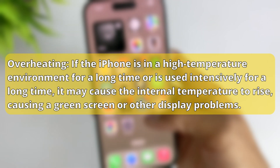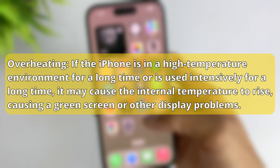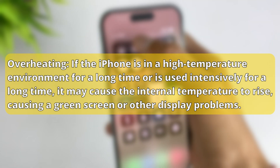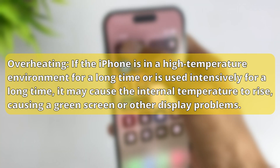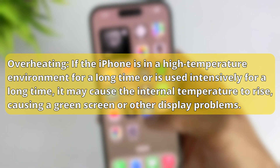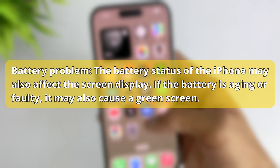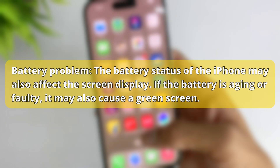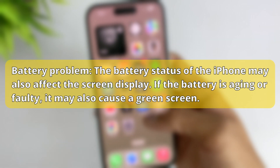Overheating: if the iPhone is in a high-temperature environment for a long time or is used intensively for a long time, it may cause the internal temperature to rise, causing a green screen or other display problems. Battery problem: the battery status of the iPhone may also affect the screen display. If the battery is aging or faulty, it may also cause a green screen.